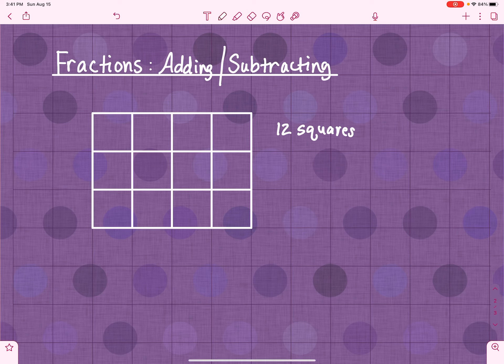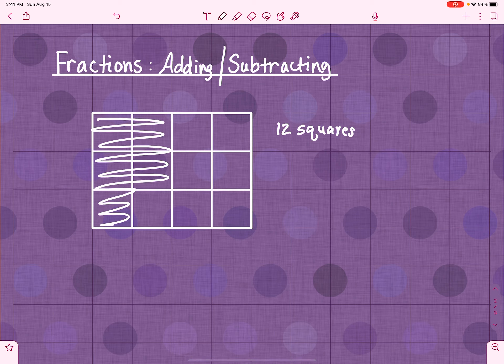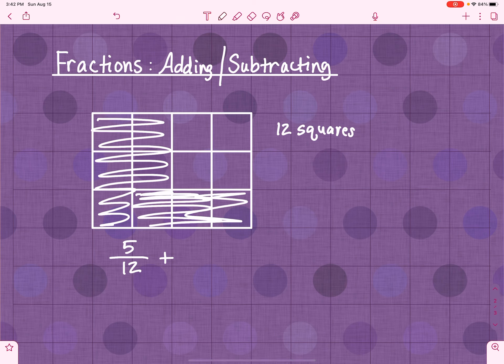Let's say I take 5 of my squares. So, 5 out of the 12 plus 3. It should be relatively easy for you to look at this and go, oh, that's 8 out of 12, right? Because I've got 8 shaded.